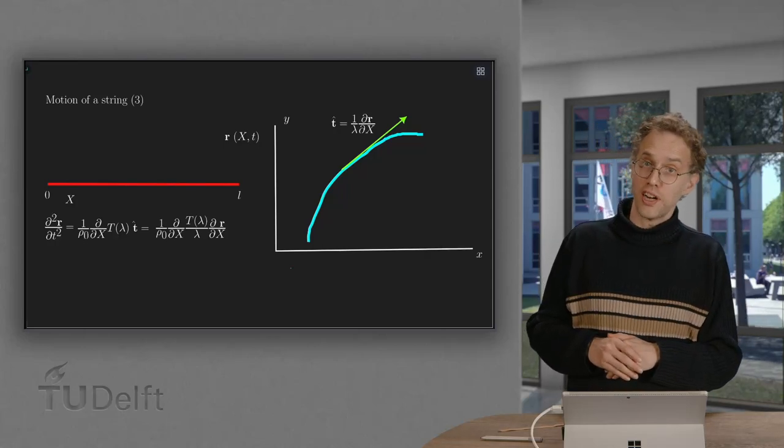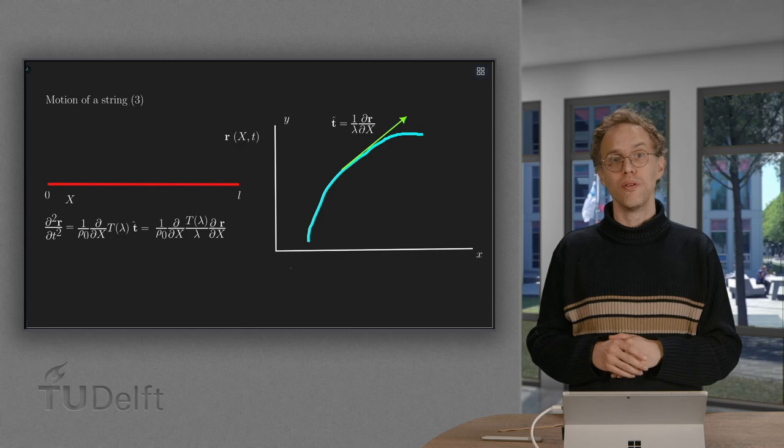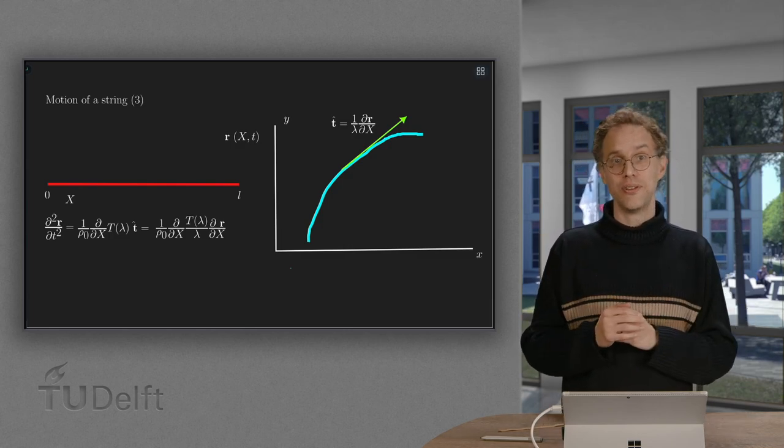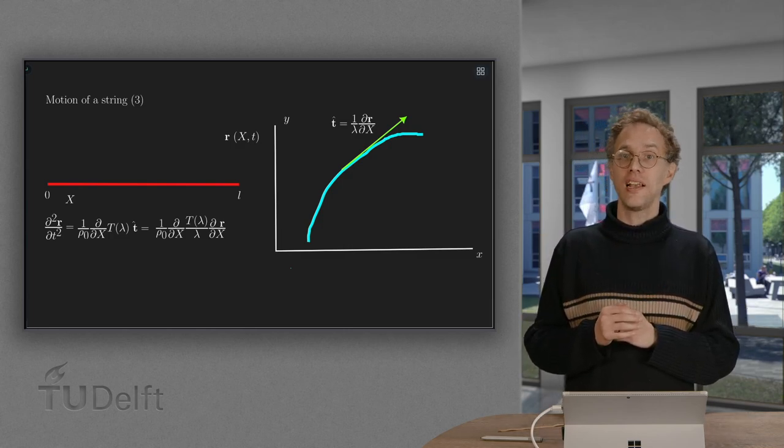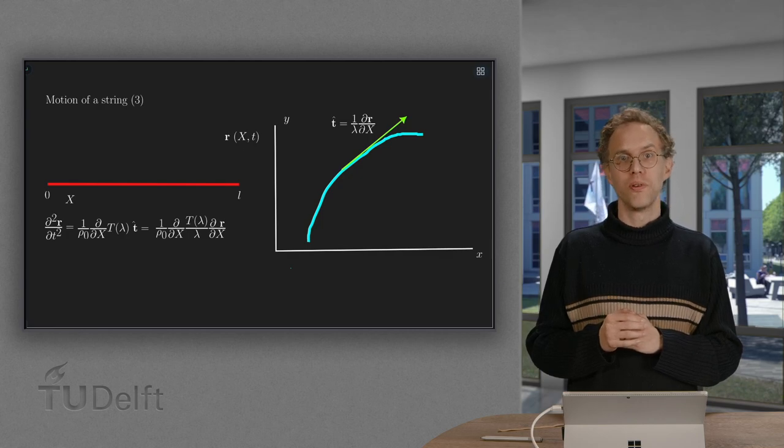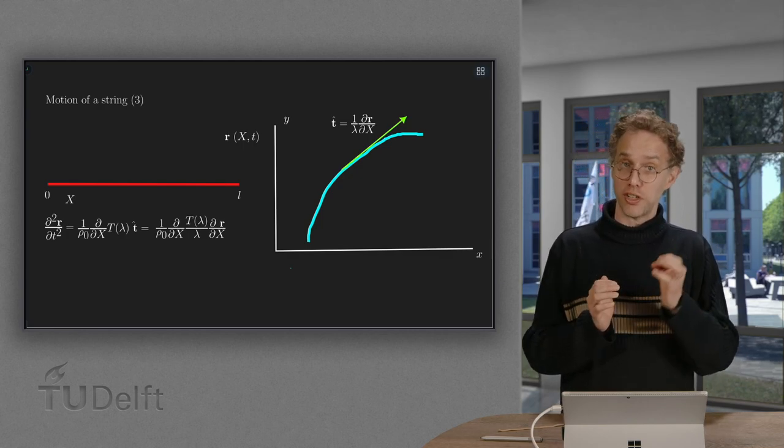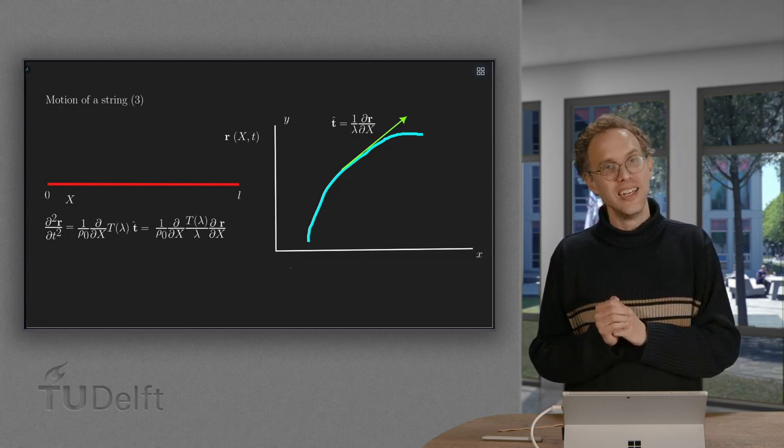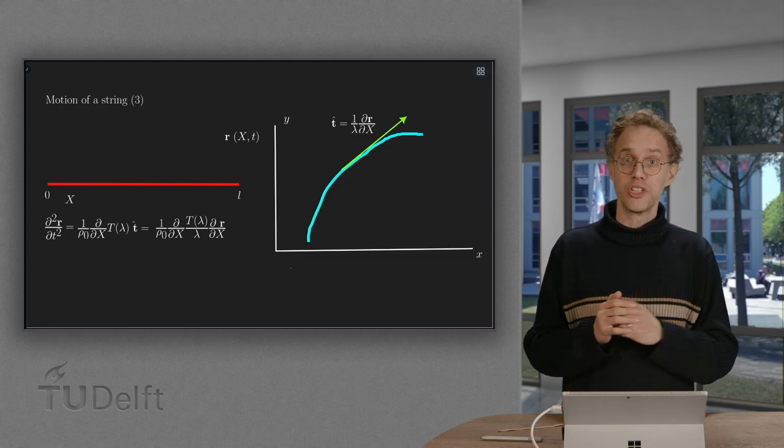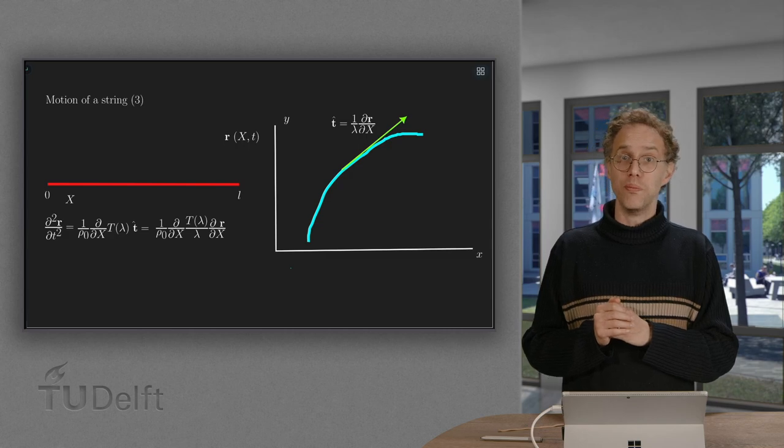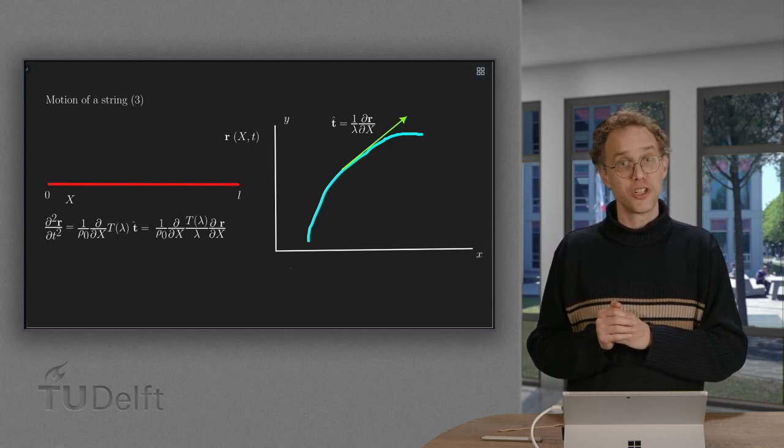The PDEs we derive to model our string are awful, coupled, and highly non-linear. Making analytical progress is not possible. Fortunately, we can make some simplifying assumptions which are physically sound and linearized. In doing so, we will end up with a much easier problem that we can in fact solve.